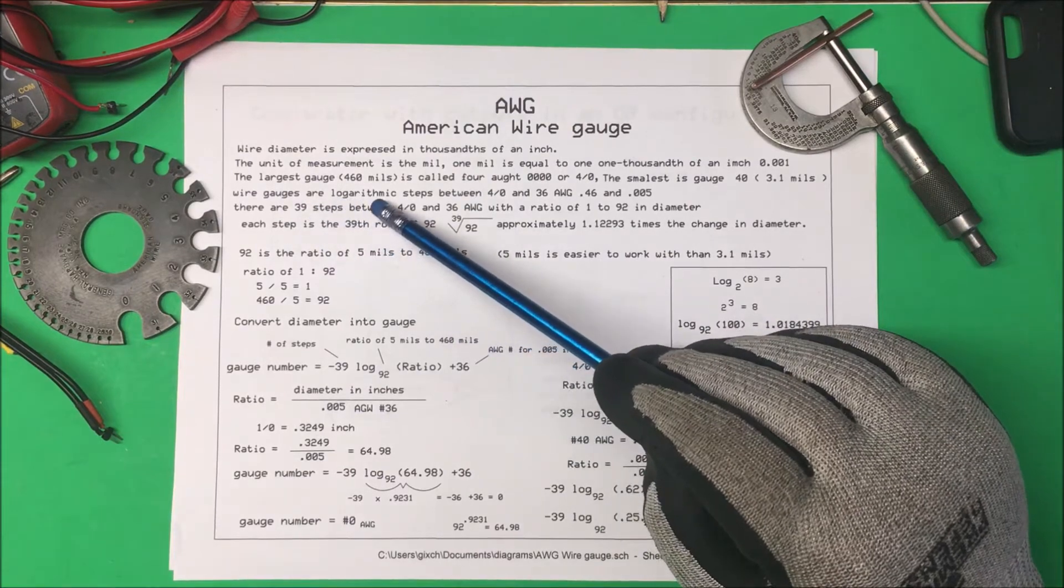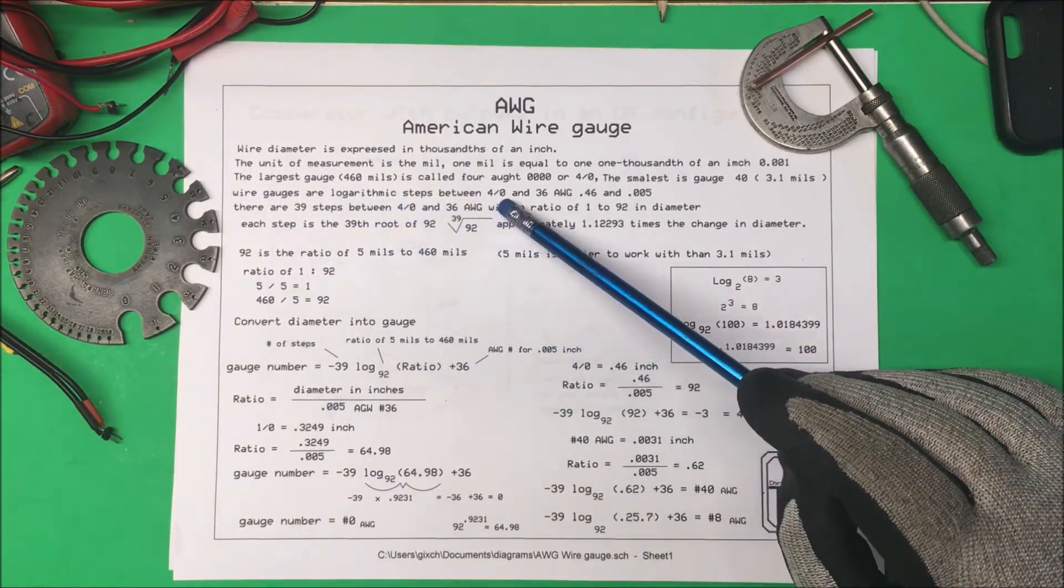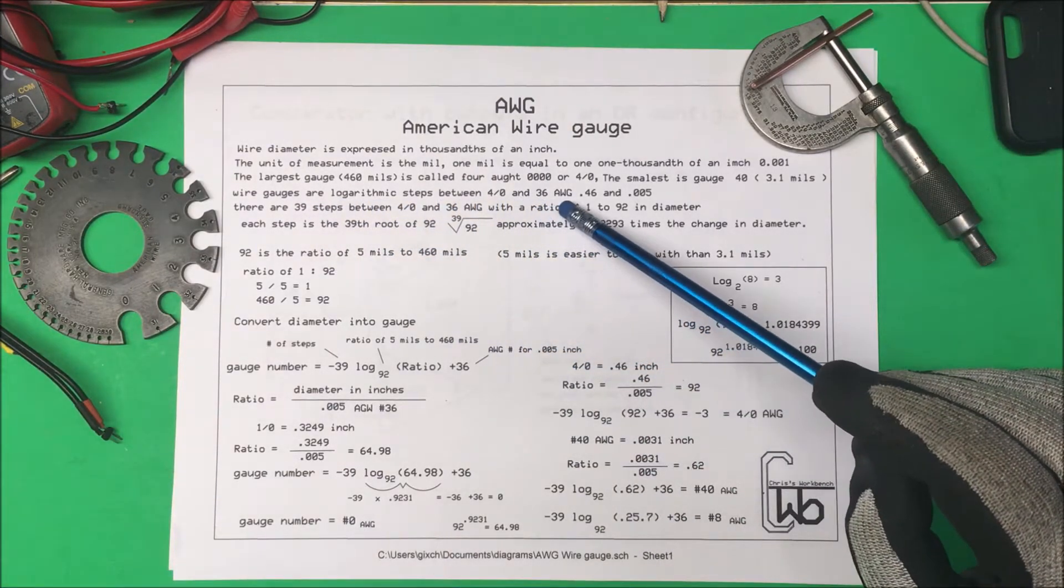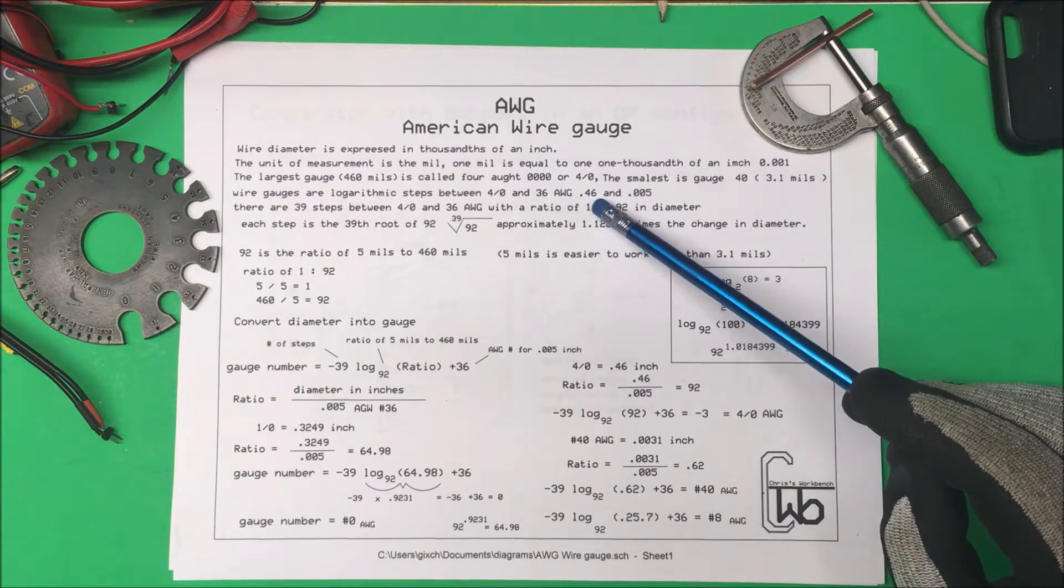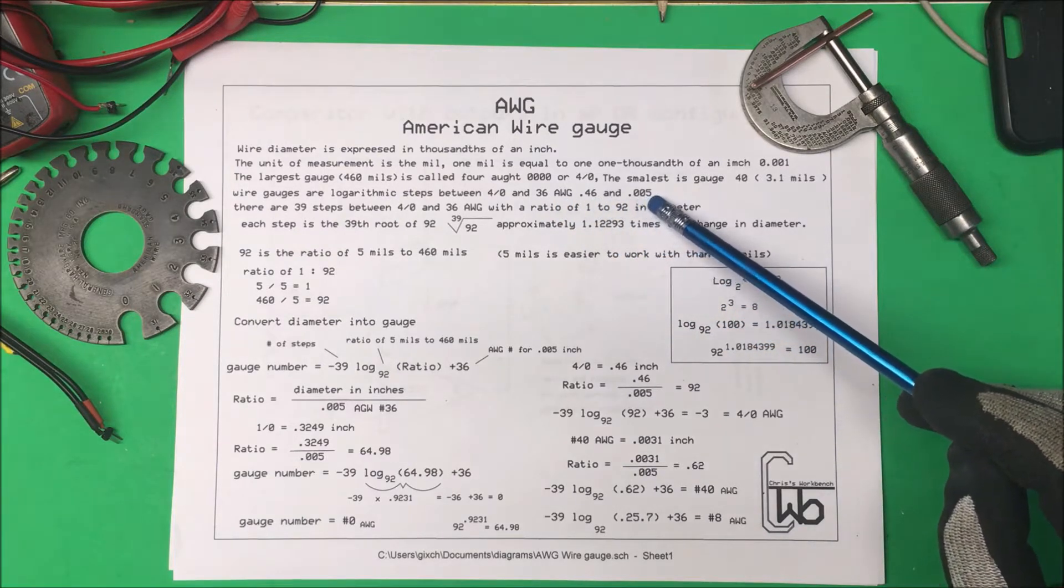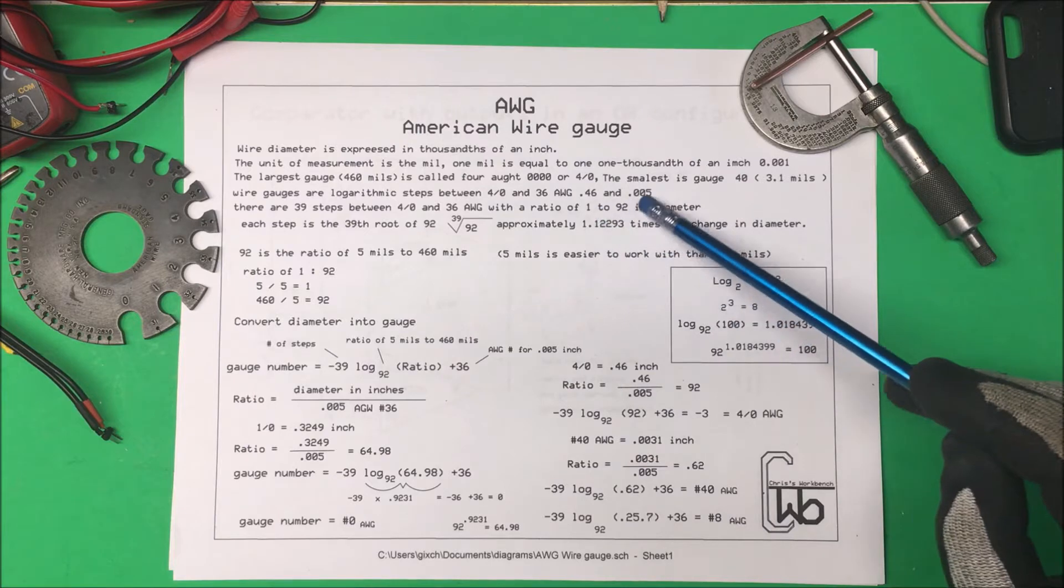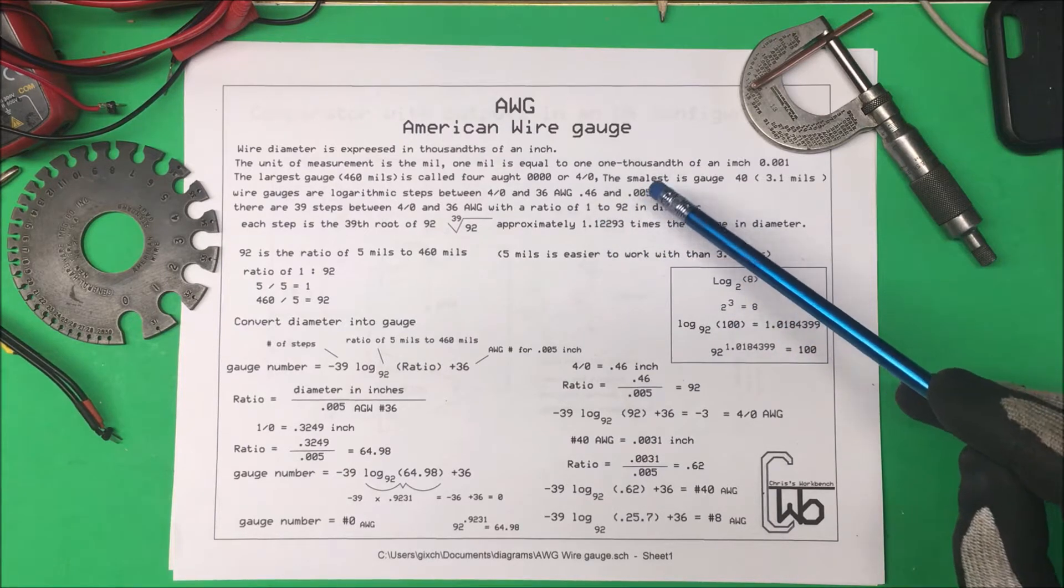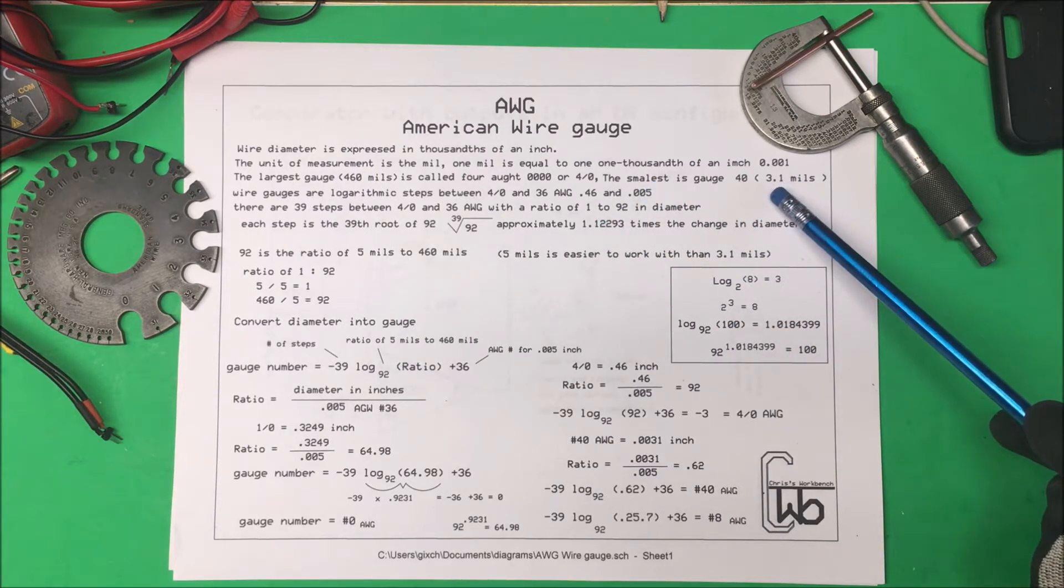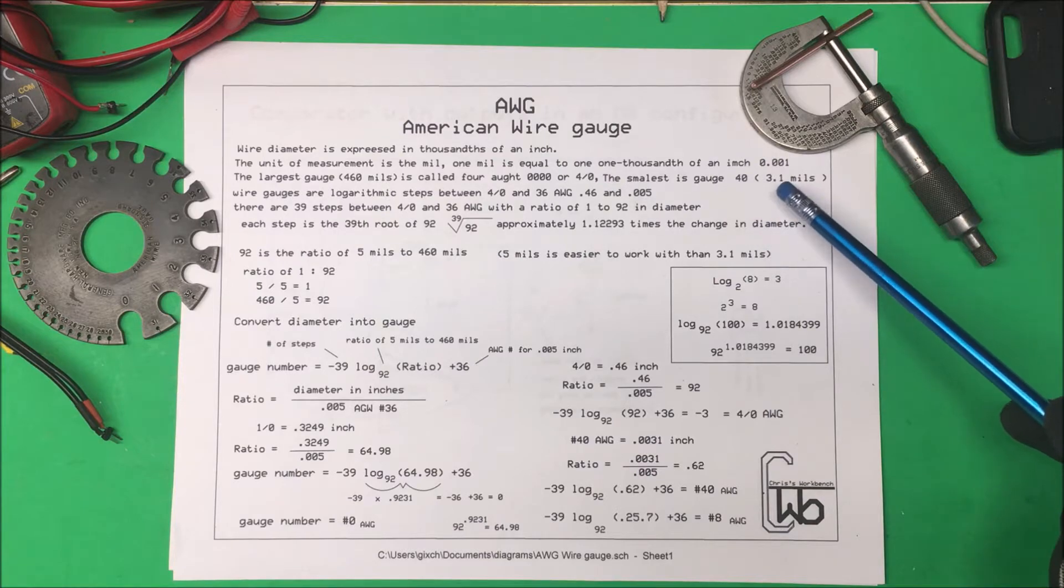Now wire gauges are logarithmic steps between four aught and 36 AGW. So it's .46 and .005. They picked this .005 because that's a lot easier to work with than 3.1 mils.